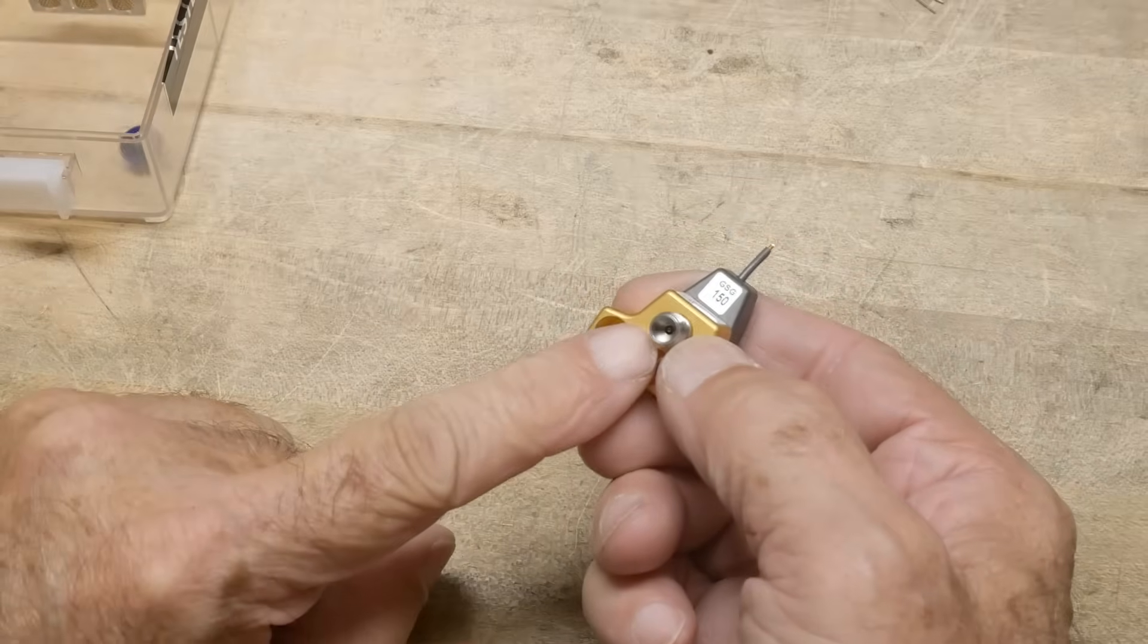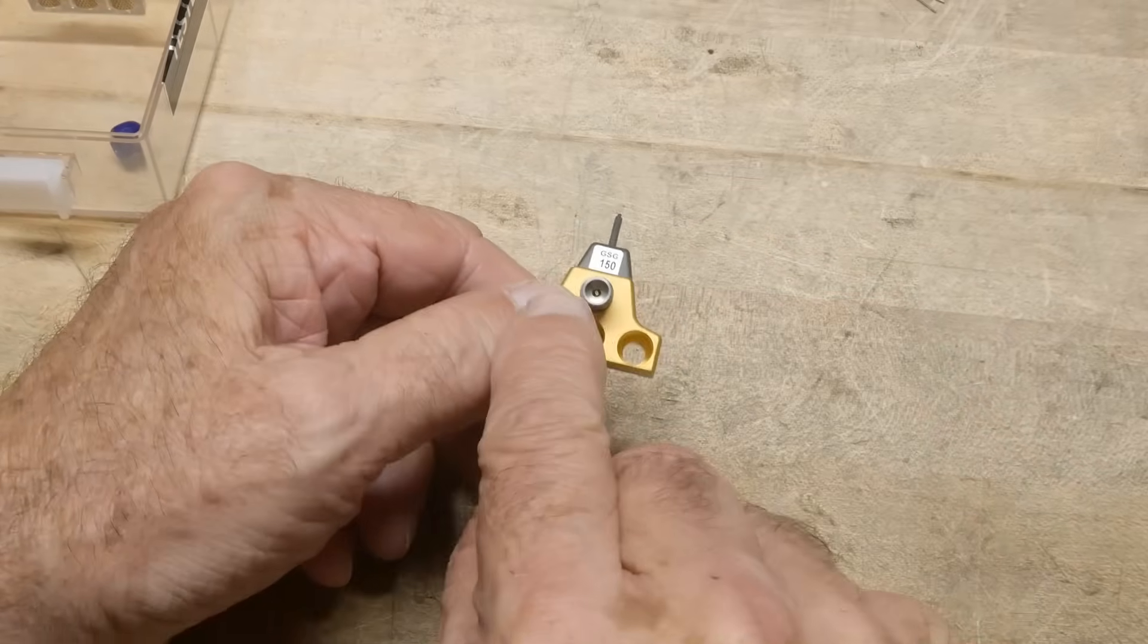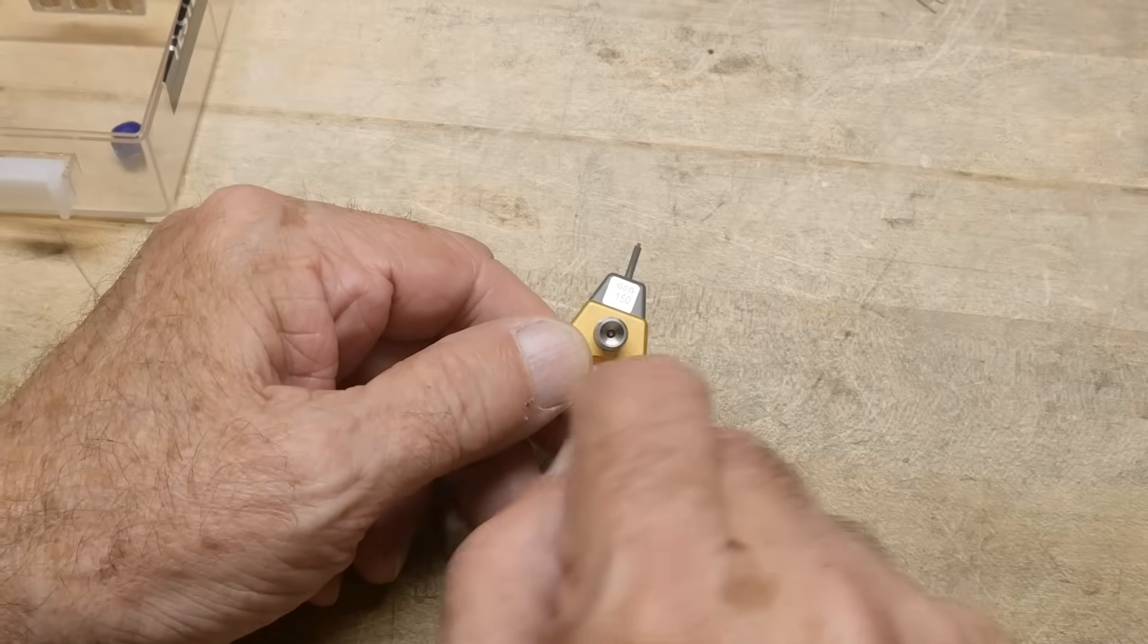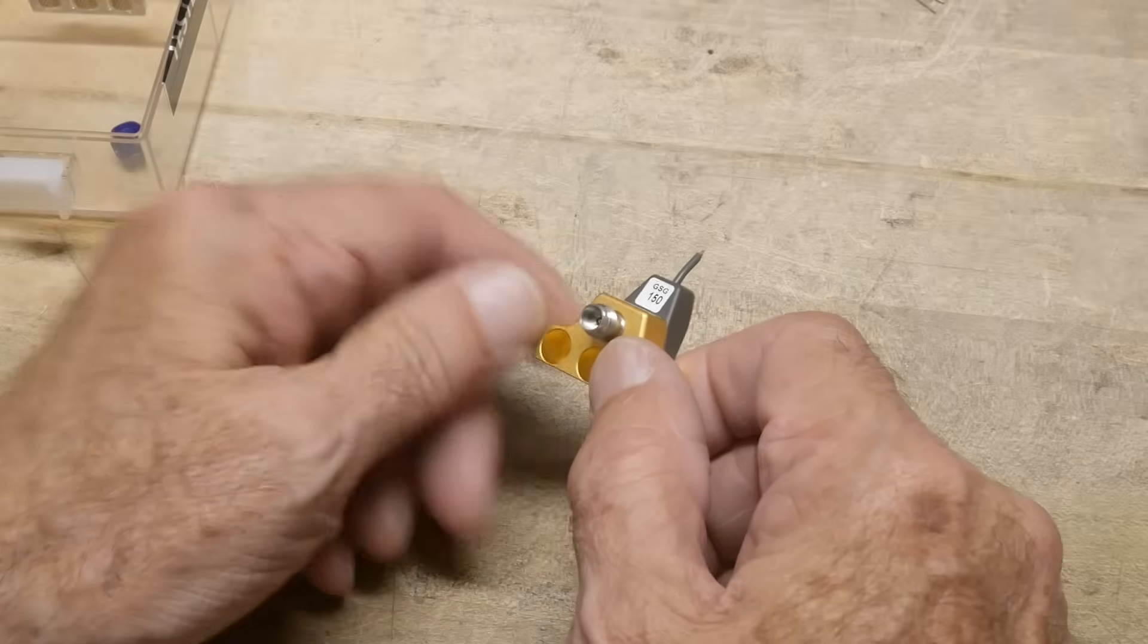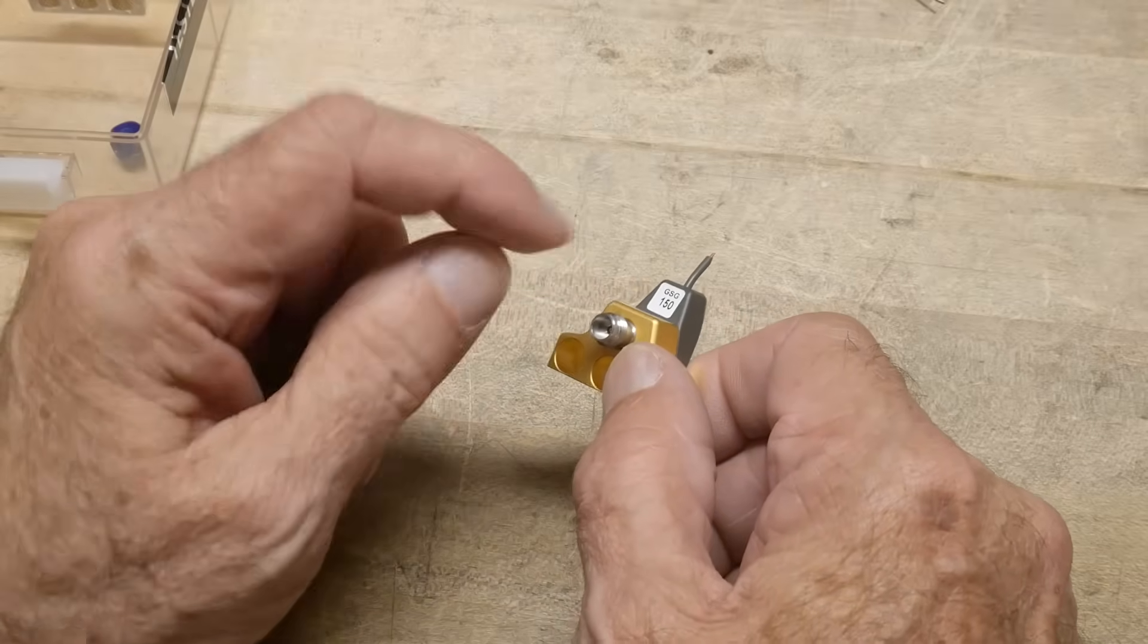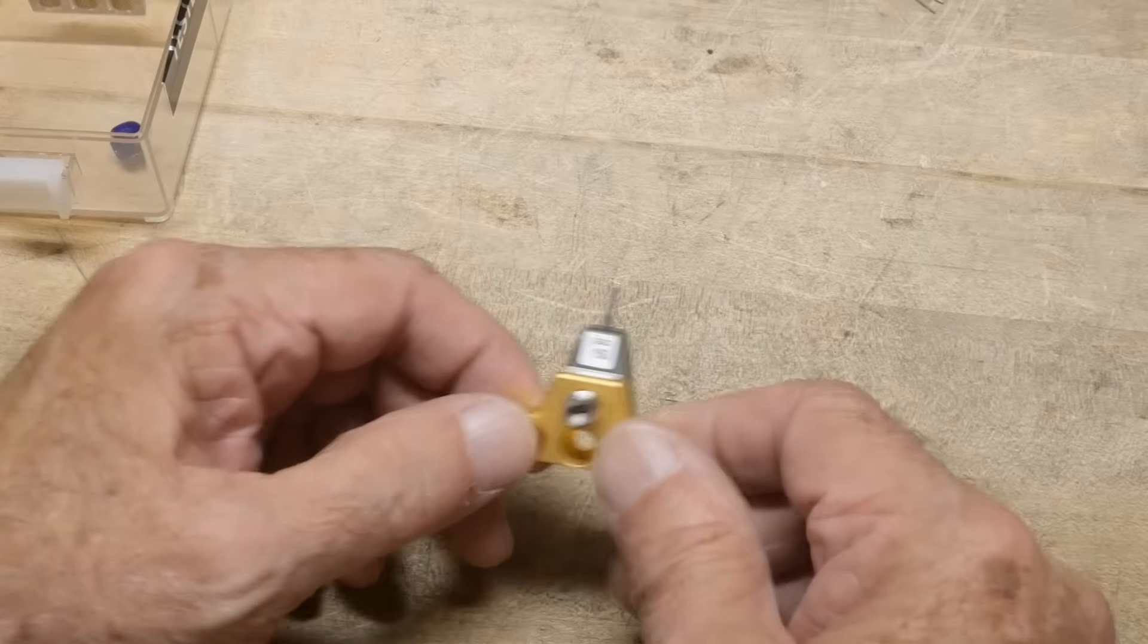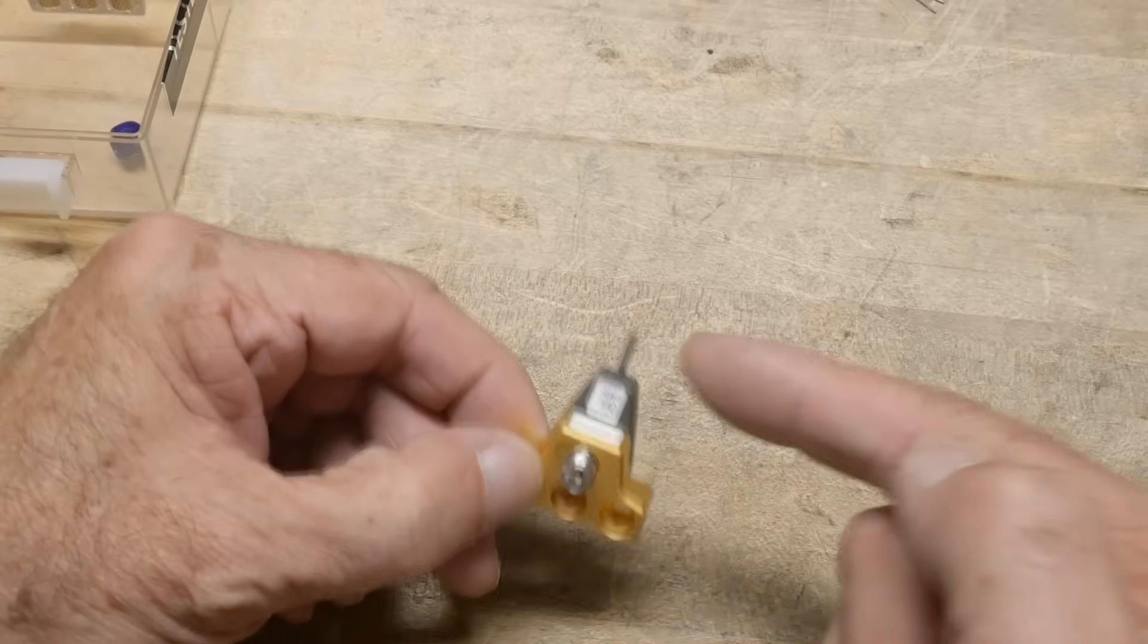There's a connector here. It looks kind of like an SMA connector, but it's not. It's super high frequency. This is a 1.85 millimeter connector, so just the connector itself, you can't afford this thing. This probe was specified at 65 gigahertz, alright, so it's a 65 gigahertz probe.